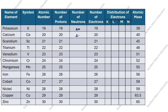Calcium: atomic mass 40, atomic number 20, so 40 minus 20 is 20. Scandium: atomic mass 45, 45 minus 21 is 24. Titanium: atomic mass 48 minus 22 is 26. Vanadium: atomic mass 51, atomic number 23, it comes to 28. Chromium: atomic mass 52, atomic number 24, it comes to 28.